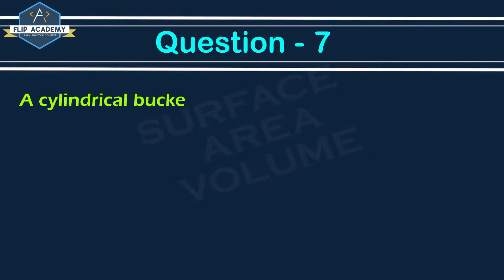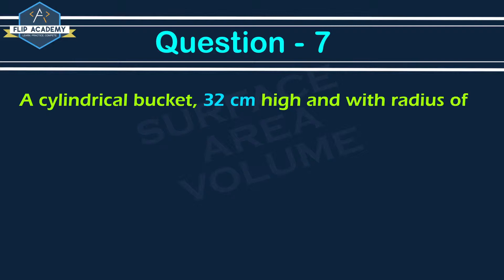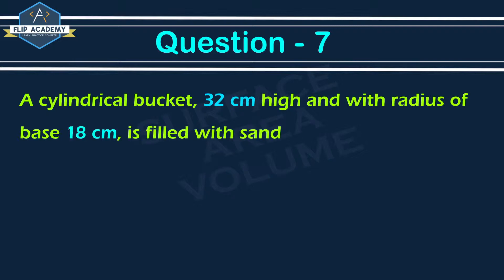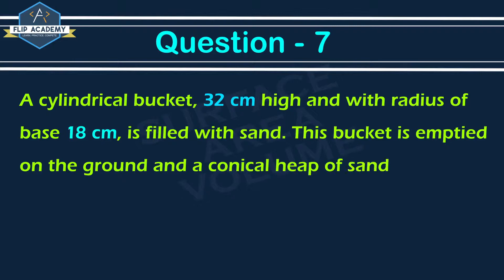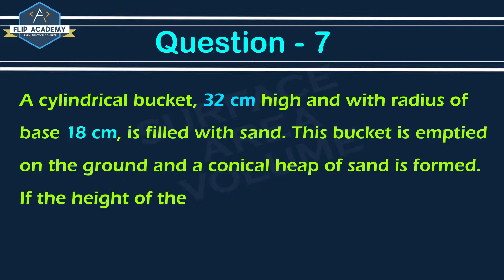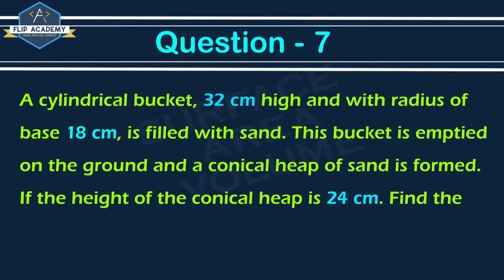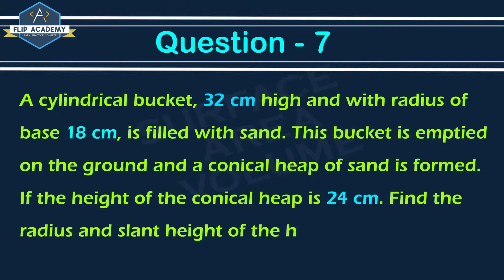Question 7: A cylindrical bucket 32 cm high with radius of base 18 cm is filled with sand. This bucket is emptied on the ground and a conical heap of sand is formed. If the height of the conical heap is 24 cm, find the radius and slant height of the heap.